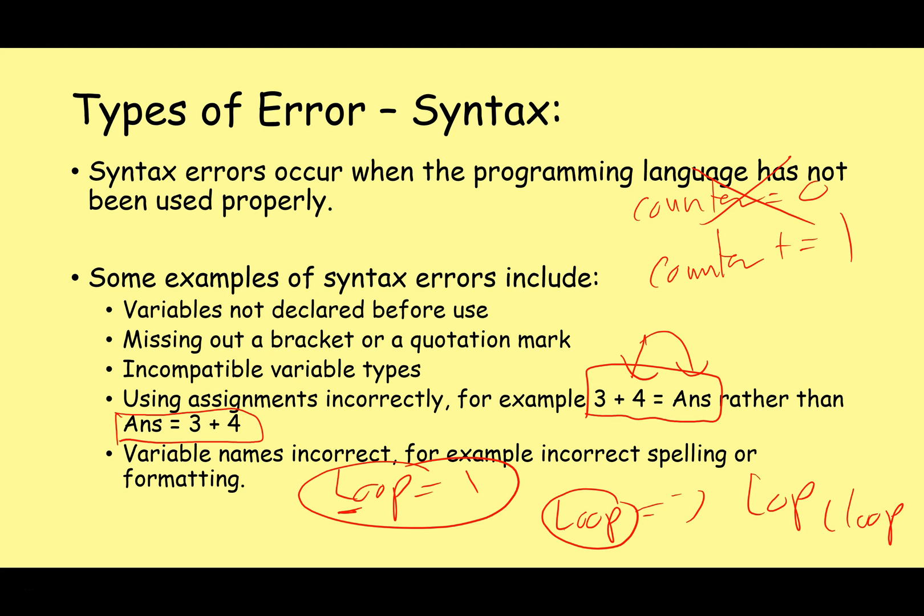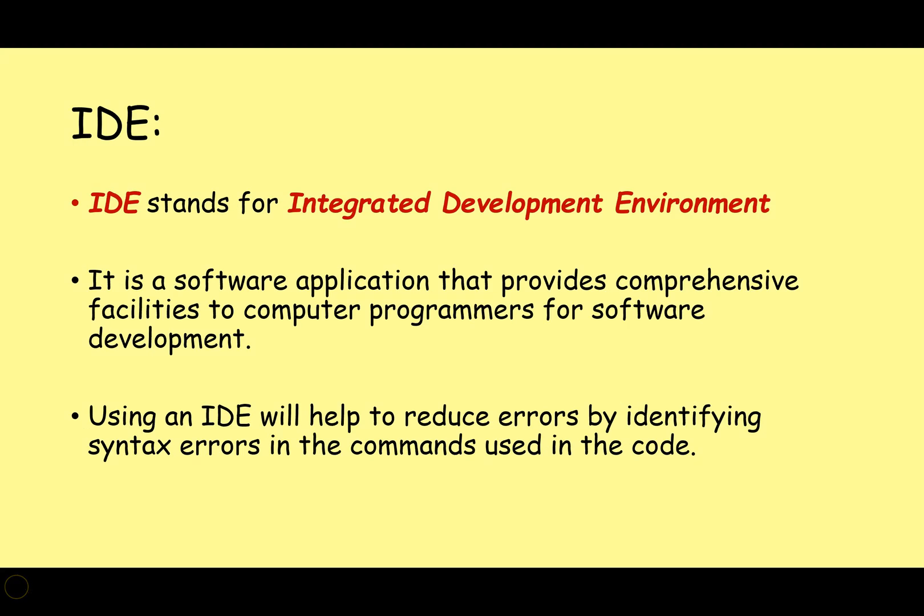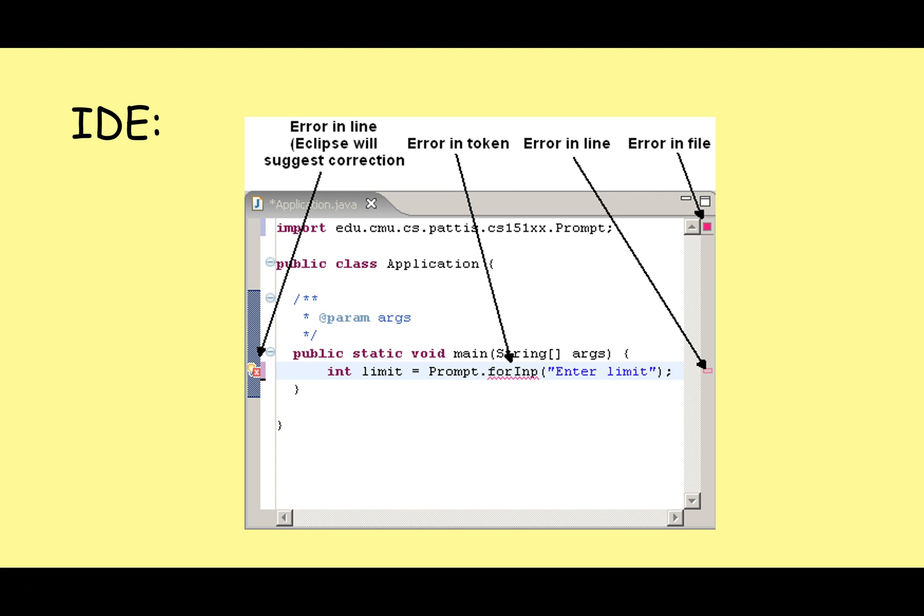One of the ways that we can try to reduce syntax errors in our program is to use a good IDE, an integrated development environment. An IDE is just a software application that provides a comprehensive set of facilities to computer programmers for software development. One of these will be some sort of error diagnostics. So just like Word will try and highlight all your spelling and grammar errors, a good IDE will try and spot those syntax errors and alert you to them before you start trying to run the program. For example, here's a simple example from the Eclipse IDE, and straightaway it's trying to suggest and highlight to you that you have made this mistake so you can fix it quickly.